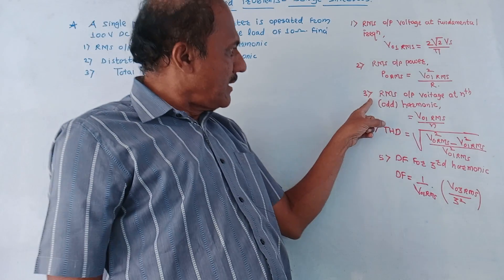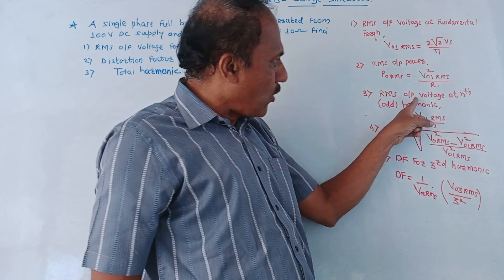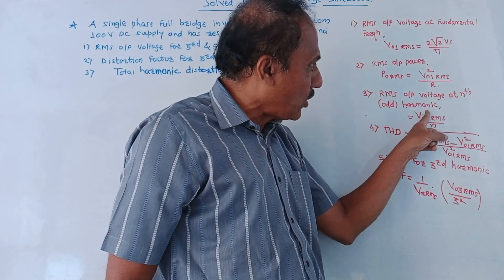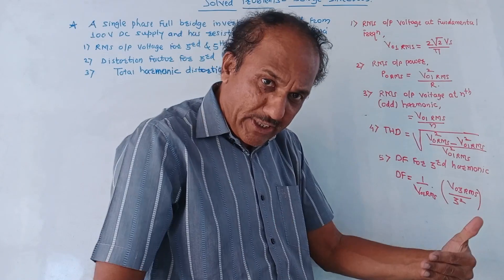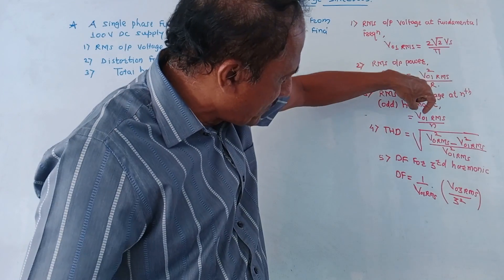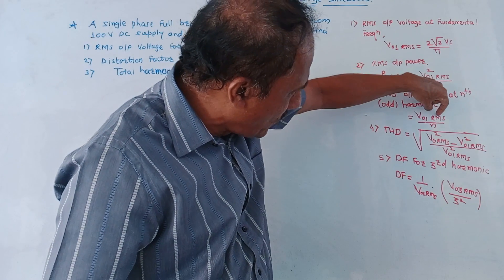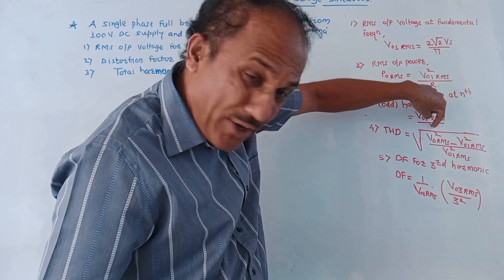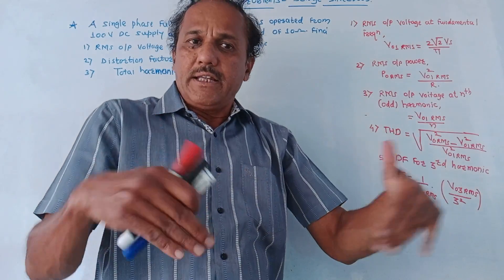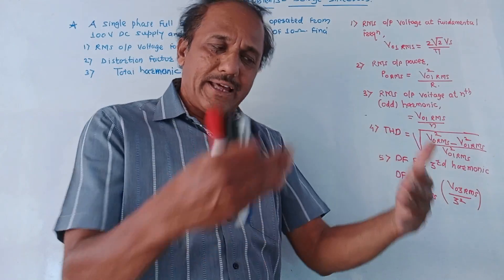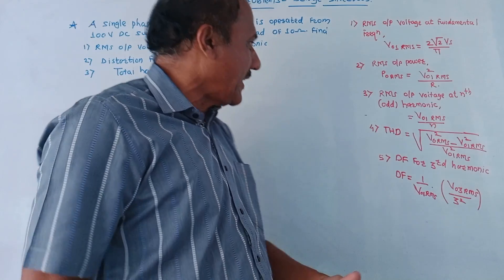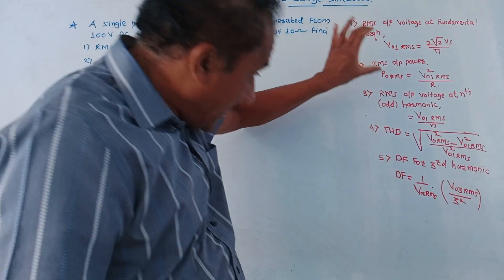Third formula is RMS output voltage at the nth harmonic. The basic formula is V01RMS upon n, where n can be any odd number like the third, fifth, seventh harmonic and so on.